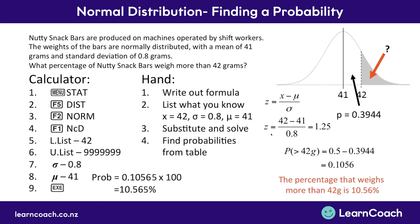Therefore, the percentage of bars that weigh more than 42 grams is 10.56% when we multiply our probability by 100. And that would be your answer. Hopefully this gives you an idea of how you can find a probability — using your calculator, and secondly by hand if you need to.